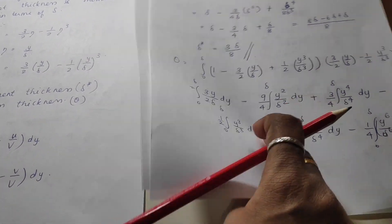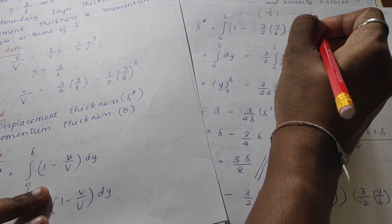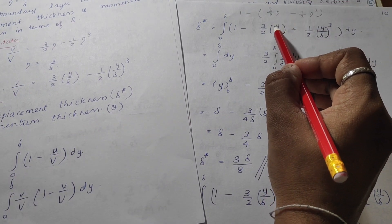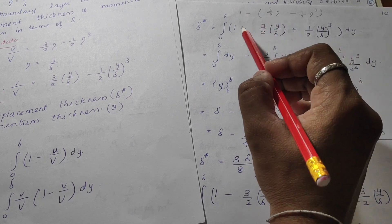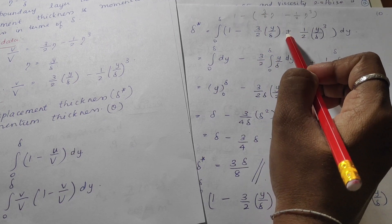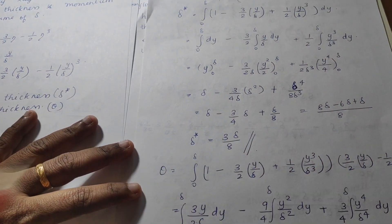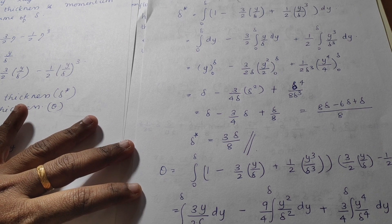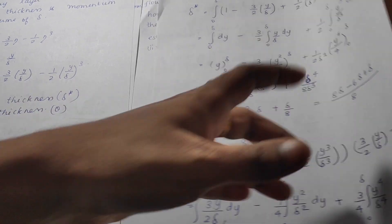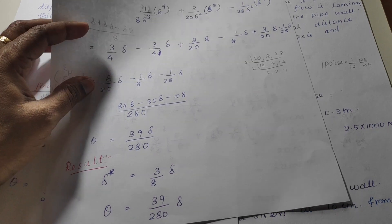For δ*, substituting η = y/δ and expanding: δ* equals the integral of (1 minus 3/2·η plus 1/2·η³) which becomes 1 minus (3/2)(y/δ) plus (1/2)(y/δ)³. Simplify carefully, and the final answer is δ* equals 3/8 δ. Similarly, the momentum thickness is obtained. Write down the final answers clearly.